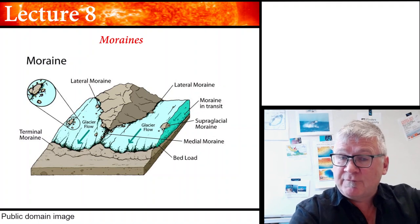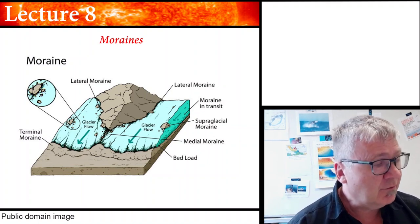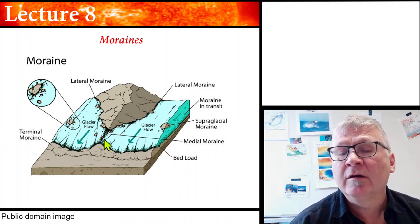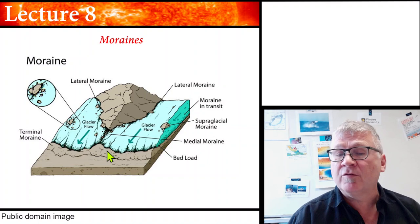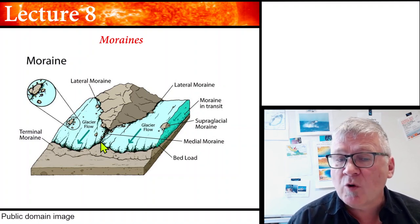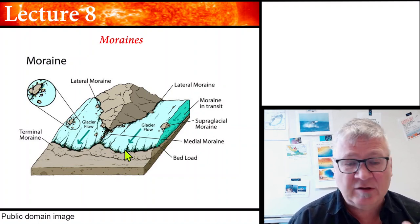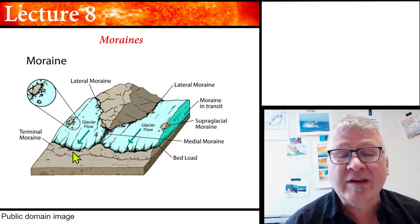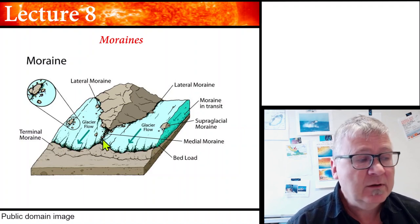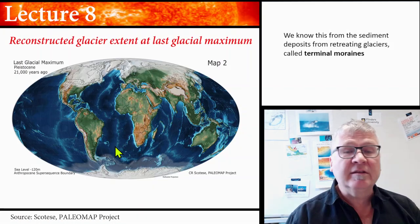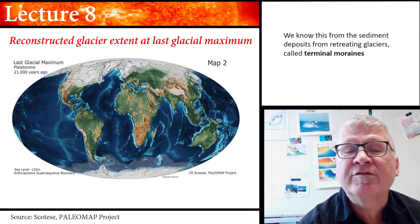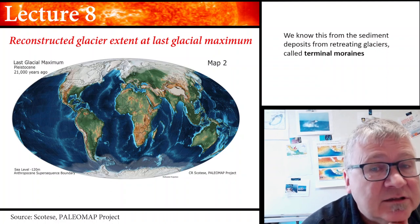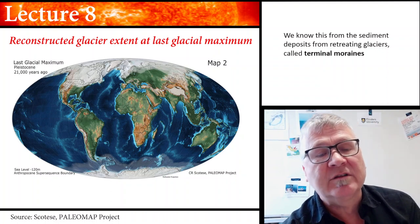The terminal moraine is essentially the front of this glacier flow. It's shown here in the sketch. All we need to do is date rocks in particular regions — a special type of rocks that you can find — and you can reconstruct the locations of the terminal moraines. This is the reconstructed glacier extent at the last glacial maximum, about 21,000 years ago.